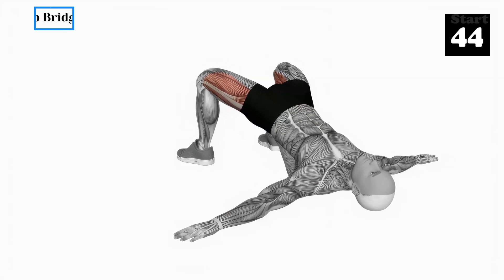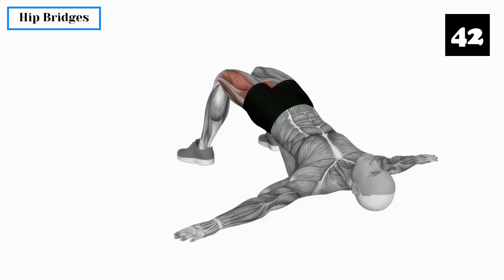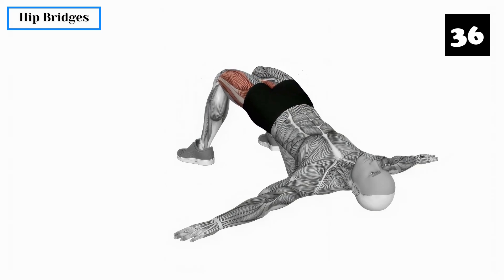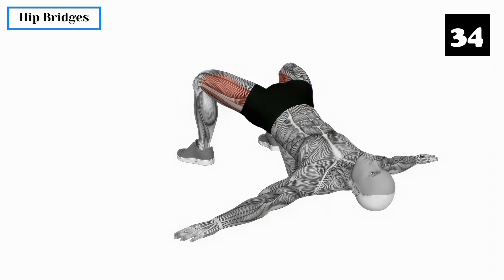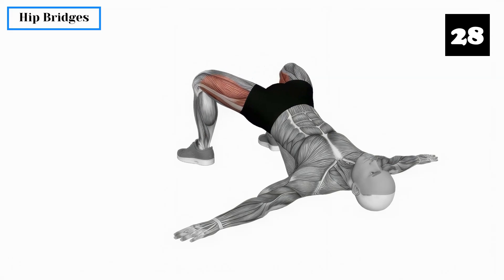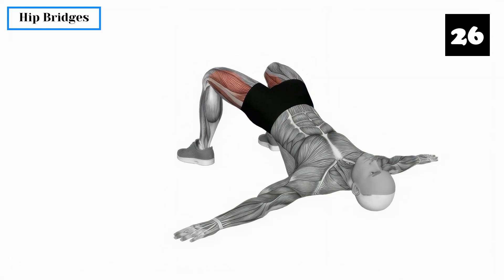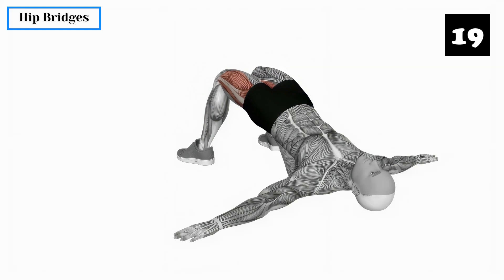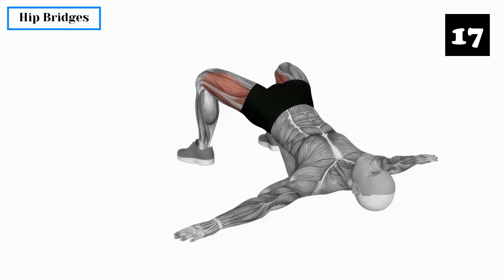Exercise 3: Hip Bridges. Hip bridges are excellent for activating the pelvic floor muscles and promoting blood flow to the groin area. Lie on your back, bend your knees and keep your feet flat on the floor. Lift your hips up towards the ceiling, creating a straight line from your knees to your chest. Hold this position for a few seconds, then slowly lower your hips back down. Repeat this exercise in sets of 10.